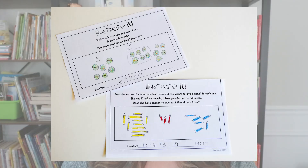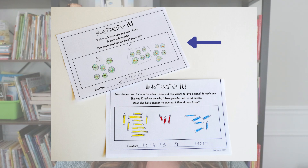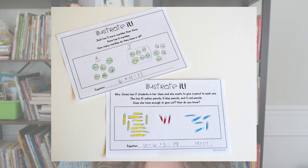Last but not least in this big freebie, I have some story problems. I call them 'Illustrate It' because I really want students to make pictorial representations of what's going on in the story problem. The first one says: Jack has five more marbles than Anna. Anna has six marbles. How many marbles do they have in all? That one is very tricky — it is a two-step problem, so your students might not be ready for it just yet.